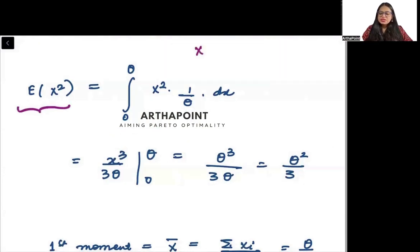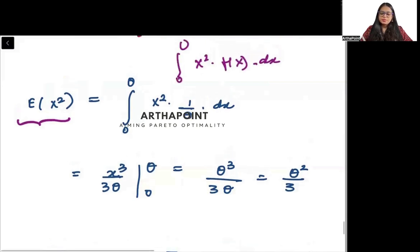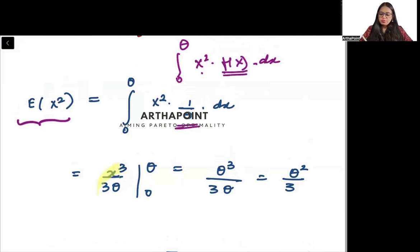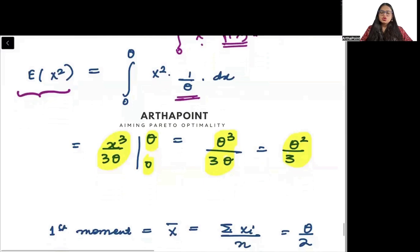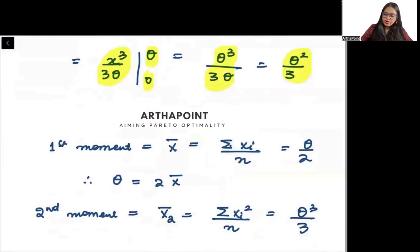The second moment is the integral of x²·f(x)dx from 0 to theta. f(x) is just 1/theta, and the integration of x² gives x³/3. So this becomes x³/(3·theta) evaluated from 0 to theta. Substituting theta for x gives theta³/(3·theta) = theta²/3. So the expected value of X² is theta²/3.